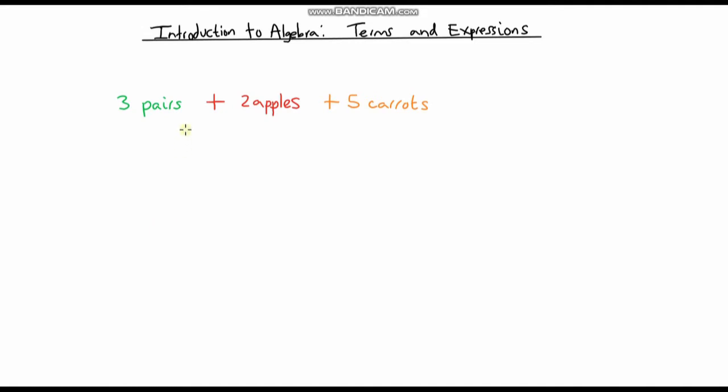Let's say we go to the supermarket and buy three pears, two apples, and five carrots, but we don't know the cost of each one. Because we don't know the cost, let's use a letter to represent the cost. If we're buying three pears, I'm going to say three times the cost of a pear, and I'll use p for pear.